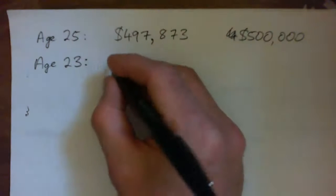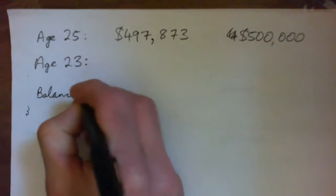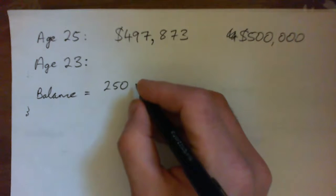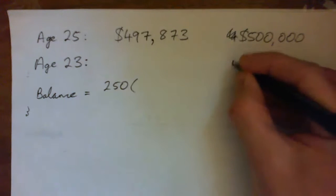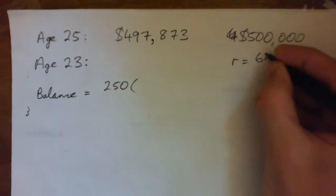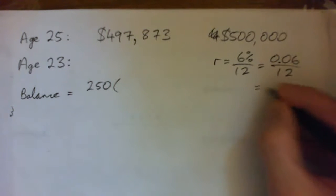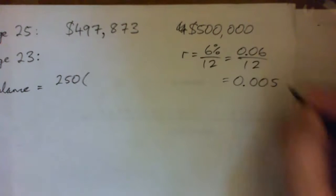So our balance after T deposits equals the deposit, which is 250, times 1 plus R to the power of T, and all that. So what's our rate? Well, our rate is 6%, but we divide that by 12 to get the monthly rate, so 0.06 over 12, right? 0.005.